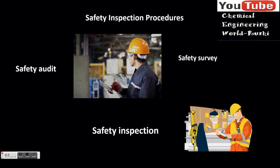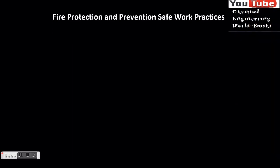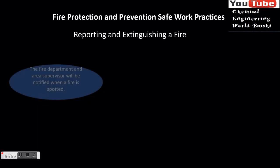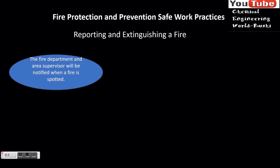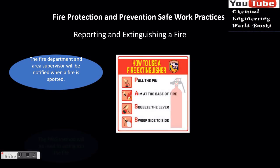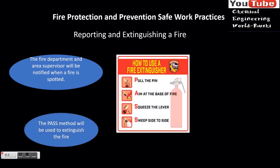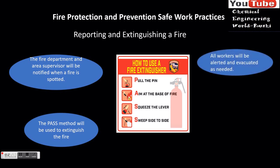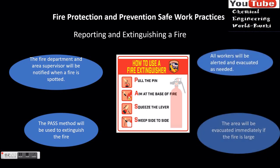Fire protection and prevention safe work practices — reporting and extinguishing a fire: the fire department and area supervisor will be notified when a fire is spotted. All workers will be alerted and evacuated. The PASS method will be used to extinguish the fire by those employees who have been properly trained. The area will be evacuated immediately if the fire is large.